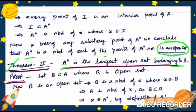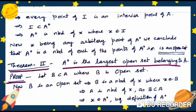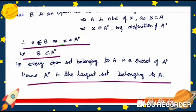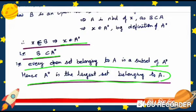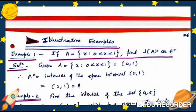Theorem 2: A° is the largest open set belonging to A. Proof: Let B ⊆ A where B is an open set. Then B is a neighborhood of x for every x in B. Since B ⊆ A, A is also a neighborhood of x, so x belongs to A° by definition of interior point. This means x ∈ B implies x ∈ A°, so B ⊆ A°. Hence every open set belonging to A is a subset of A°, making A° the largest open set contained in A.